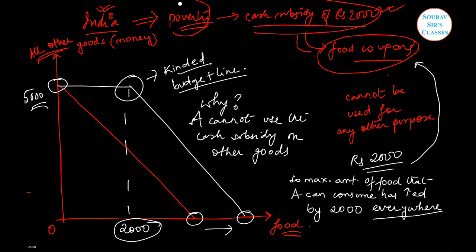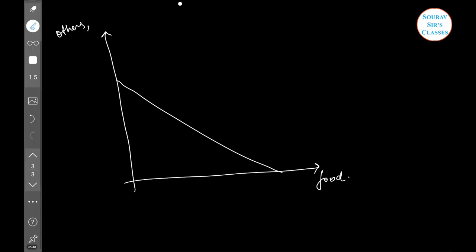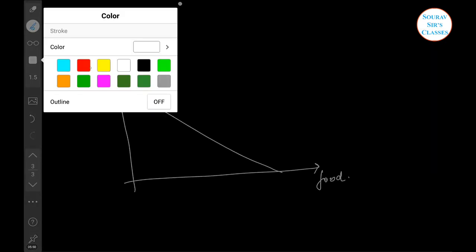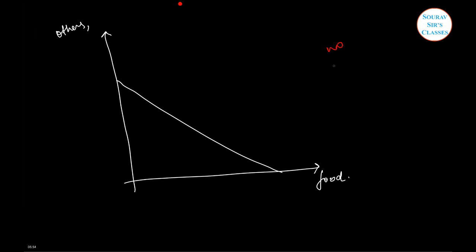Now, if there wouldn't have been such kind of restriction, then a new budget line would have been something like this. If this is food and this is others, and we have an initial budget line like this, and if we get a cash subsidy on which there is no restriction.